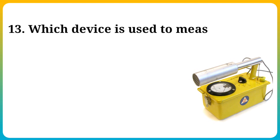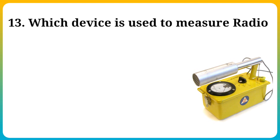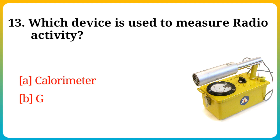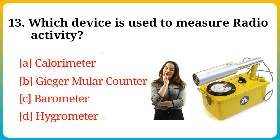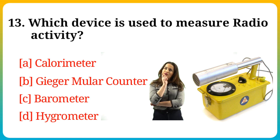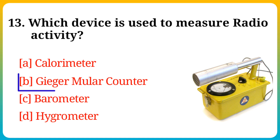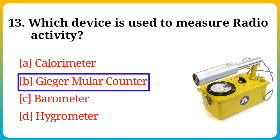Question number 13. Which device is used to measure radioactivity? Option A: Calorimeter, B: Geiger-Muller counter, C: Barometer, D: Hygrometer. Answer is option B: Geiger-Muller counter.